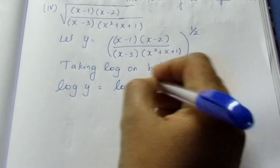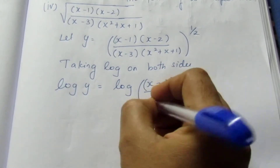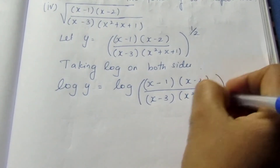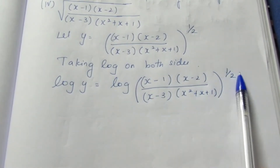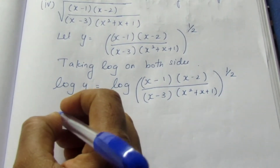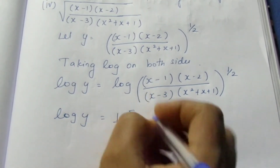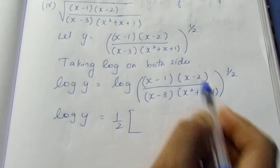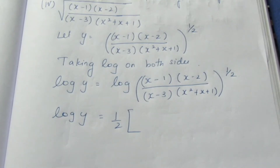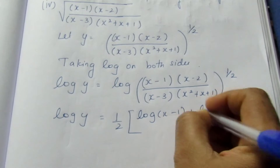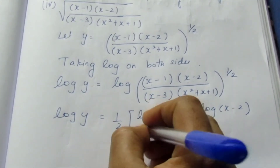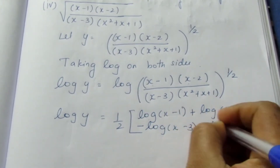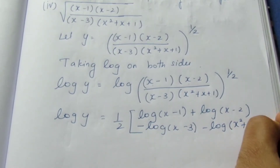Log y is equal to log of (x minus 1) into (x minus 2) divided by (x minus 3) into (x squared plus x plus 1), the whole power half. Using log power rule, this becomes half times log of the expression. Expanding using log(ab) = log a + log b and log(a/b) = log a − log b: log y equals half times [log(x−1) plus log(x−2) minus log(x−3) minus log(x²+x+1)].